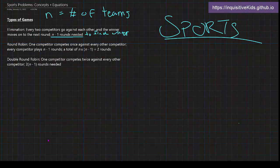Now this is called round robin. This is when one competitor competes against every other competitor. Every competitor plays n minus one rounds, and the total to finish this tournament is n times (n-1) divided by 2.